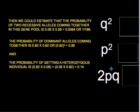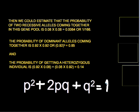Adding all these frequencies together: p squared plus 2pq plus q squared equals 1. This represents the frequency of the homozygous dominant individuals plus the frequency of the heterozygous individuals plus the frequency of the homozygous recessive individuals, which together give you 1 — the entire population.